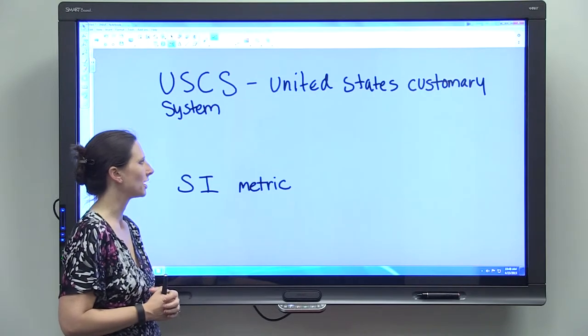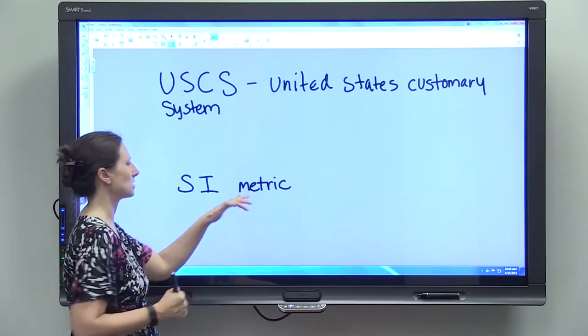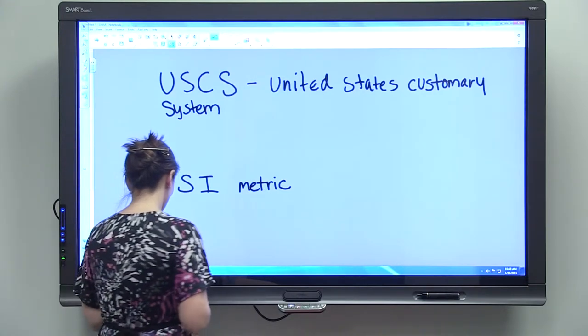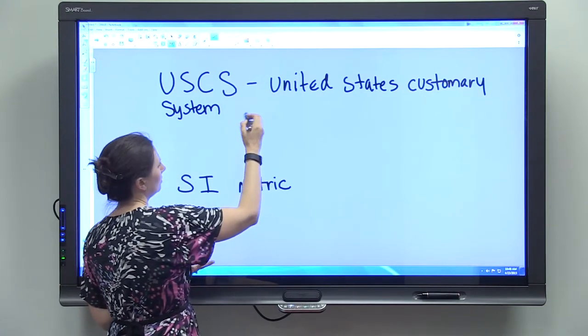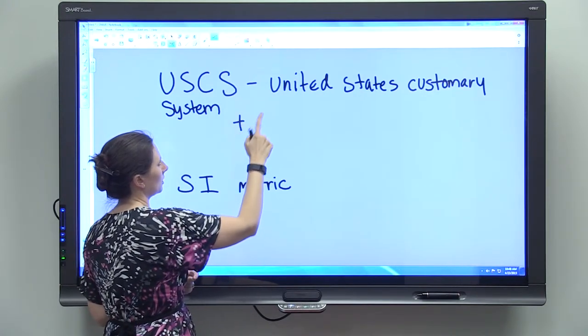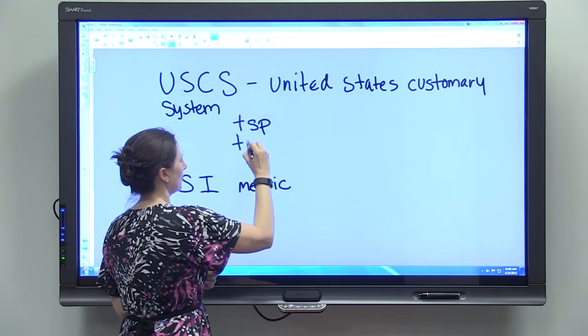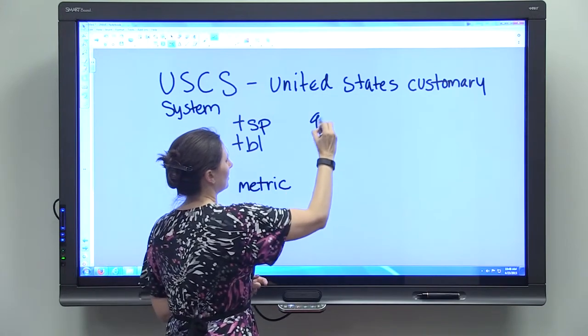The other reason why we might use the metric system is because it is much more systematic. So if you know your United States customary system, we have teaspoons, we have tablespoons, we have quarts.